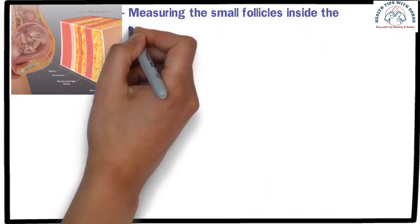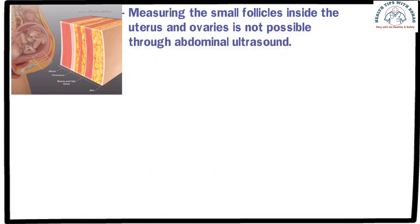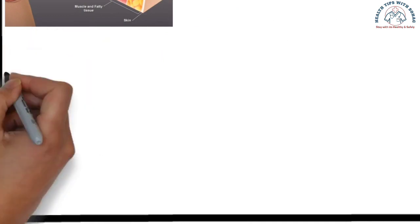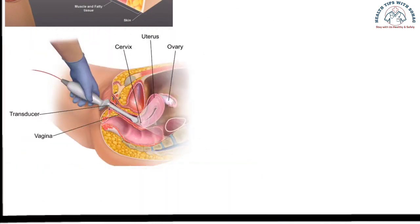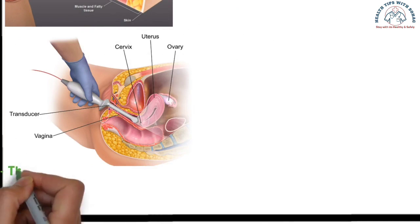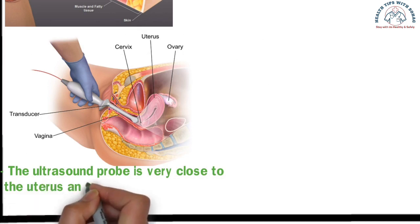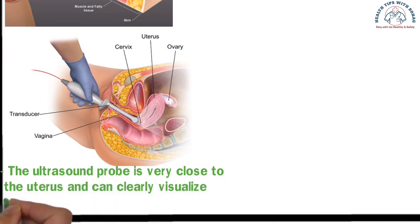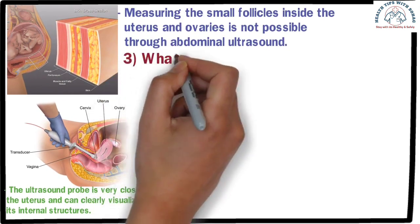Therefore, measuring the small follicles inside the uterus or ovaries is not possible through abdominal ultrasound. When performing a trans-vaginal sonography, the ultrasound probe is inserted about 2 to 3 inches into the vaginal canal, at which point the probe is very close to the uterus and can clearly visualize its internal structures. This makes it easier to diagnose the patient, which is not possible with abdominal sonography.